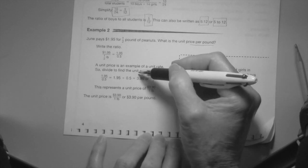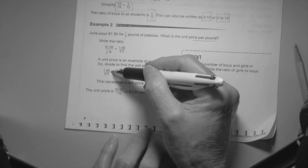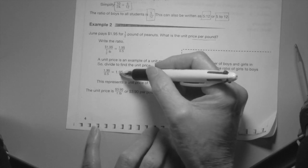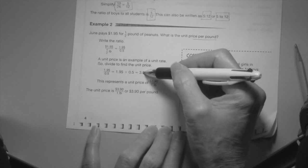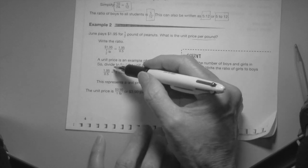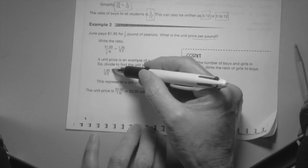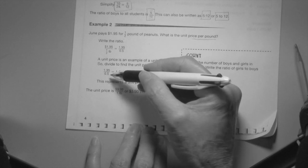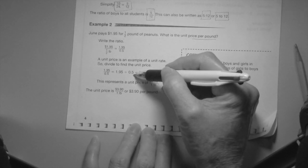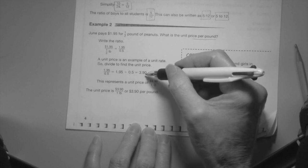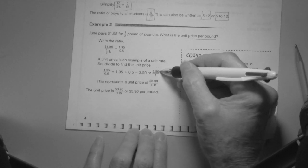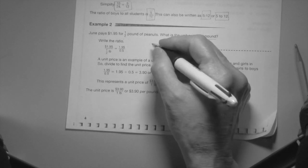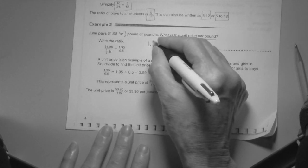A unit price is an example of a unit rate, so divide to find the unit price. $1.95 divided by 0.5. When you put the number in the calculator, $1.95 goes in first, $1.95 divide by 0.5, and you get $3.90 per one.